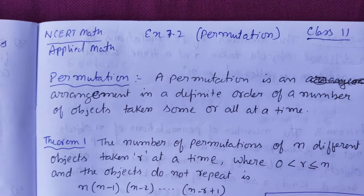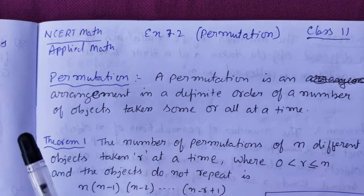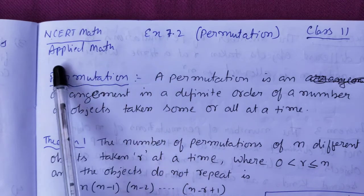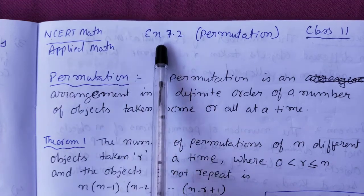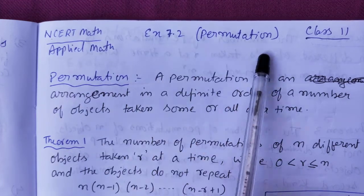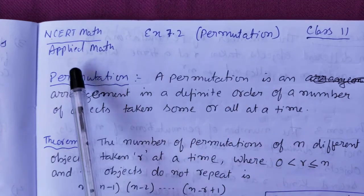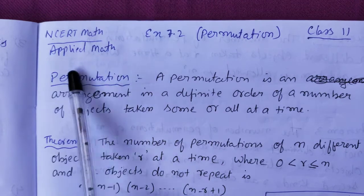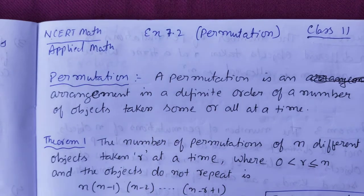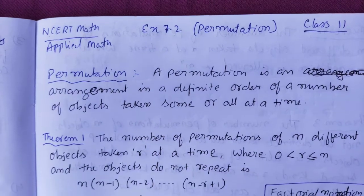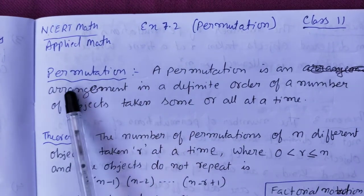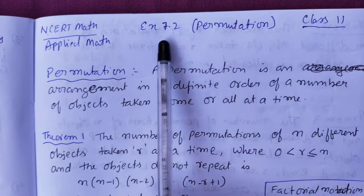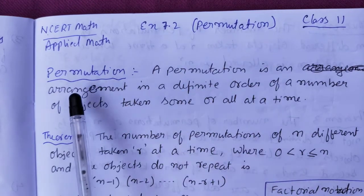Hello students of grade 11. We'll do NCERT maths exercise 7.2 on permutation. This applies to both general maths and applied maths — the syllabus is the same. Exercise 7.2 is about permutation.